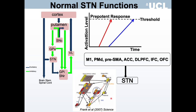According to the go/no-go model of Michael Frank, the normal function of the subthalamic nucleus is to increase the decision threshold when making decisions under conflict, to prevent premature responses and provide time for reflection and accumulation of further information before a decision is made. STN DBS may interfere with this 'hold your horses' function of the STN, reducing response thresholds and producing premature, impulsive responding.